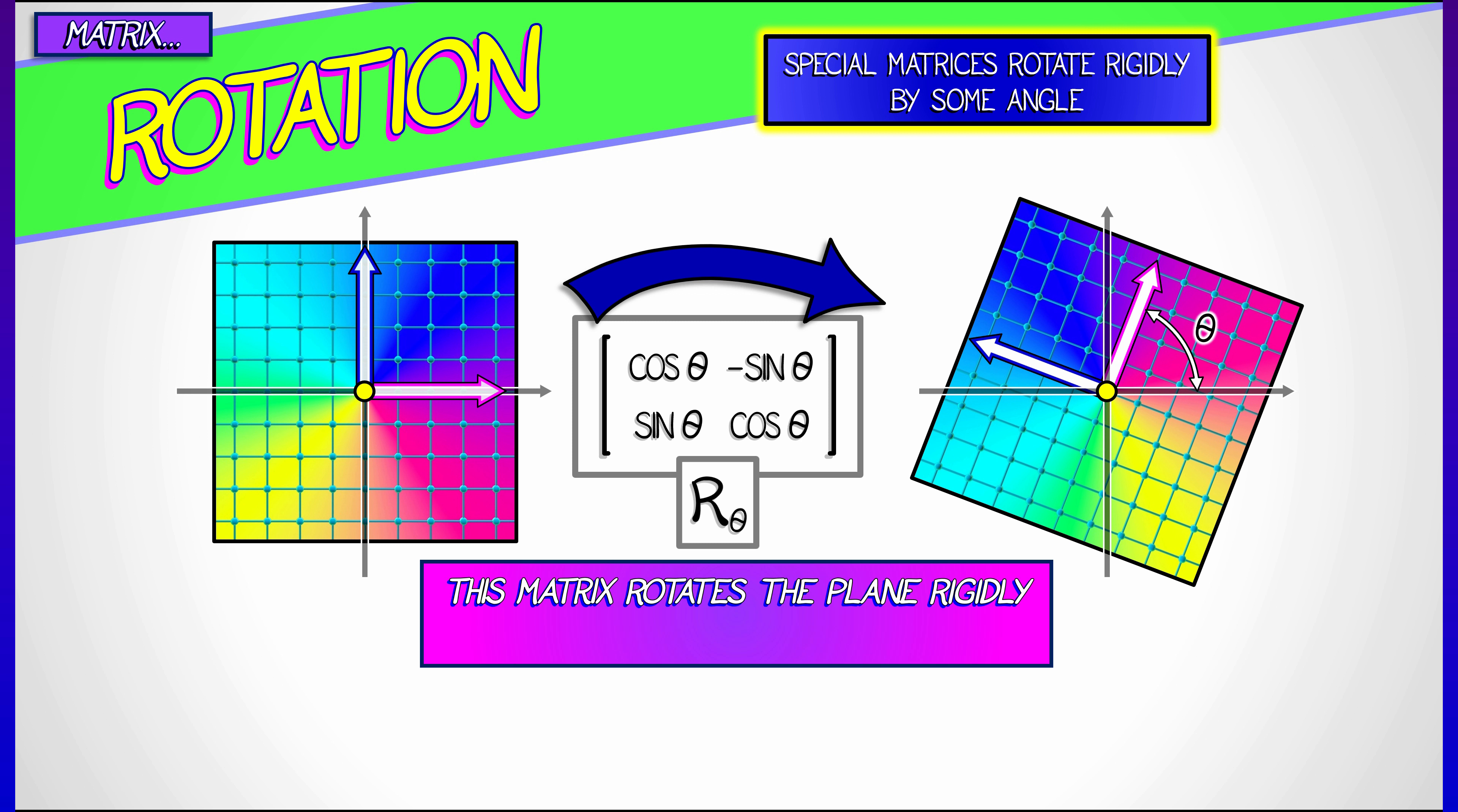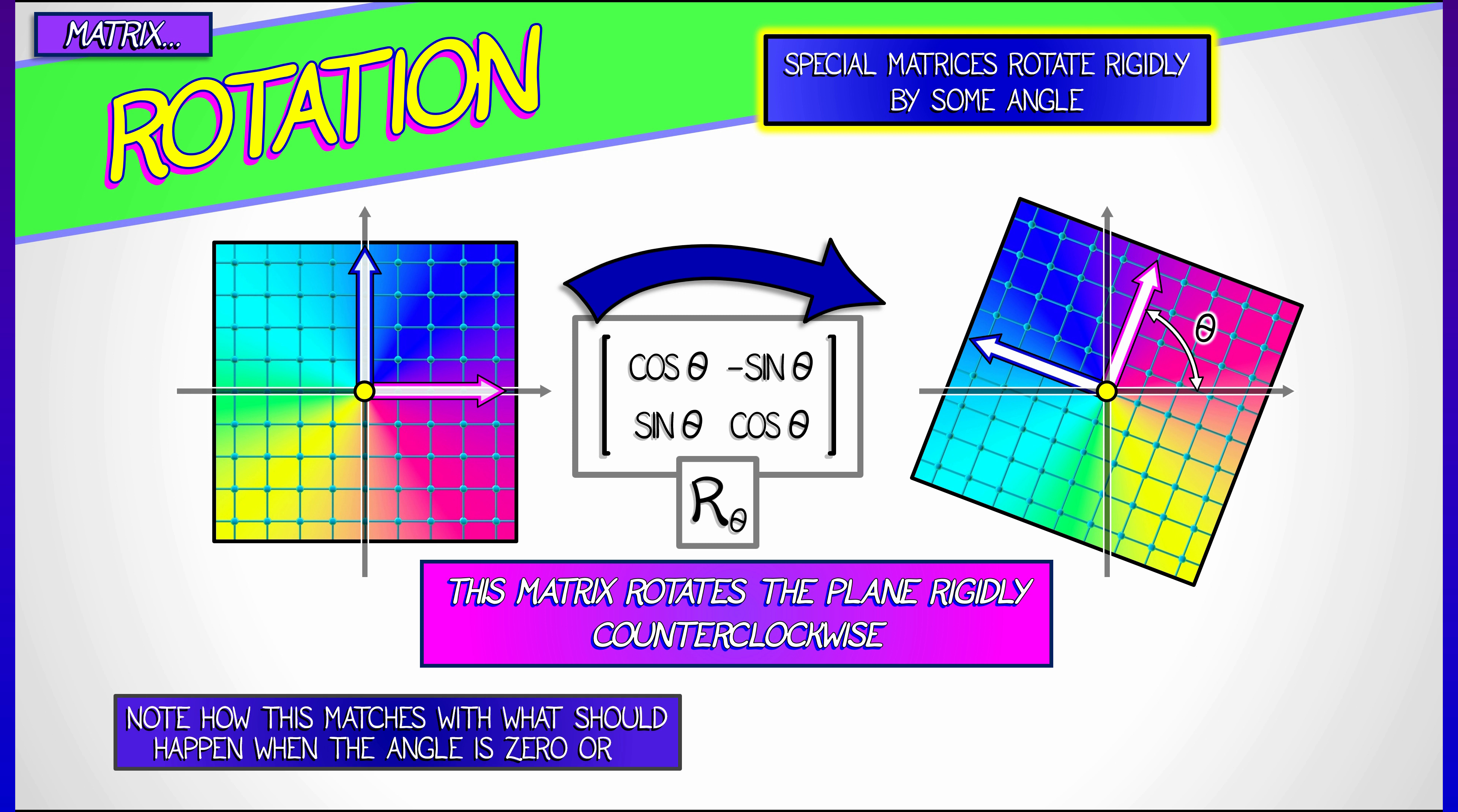And it takes the j vector to minus sine theta, cosine theta. By the fact that it's a linear transformation, everything else on the plane gets rigidly rotated along with it.